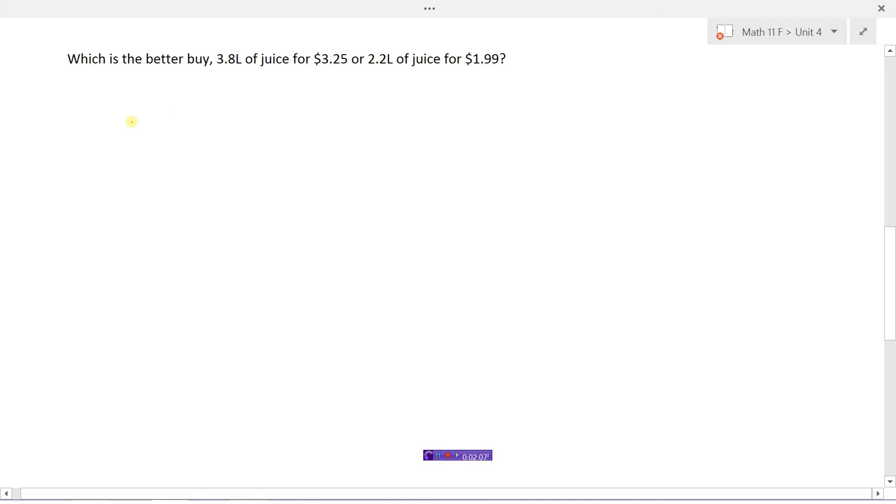So we could set these up as rates. $3.25 per 3.8 liters and another one here is $1.99 per 2.2 liters. But it's hard to compare to see which one is cheaper because they're not expressed as a unit rate. So if instead of comparing this per 3.8 liters, why don't we figure out how much it is for one liter and do the same thing over here. Then we can see easily which one is the cheapest.